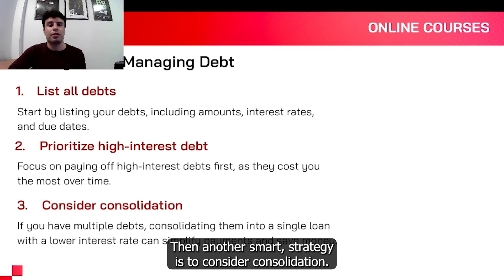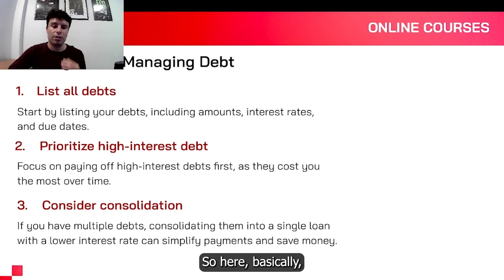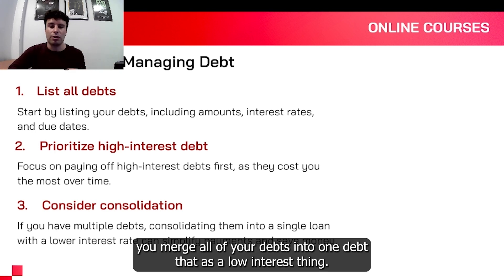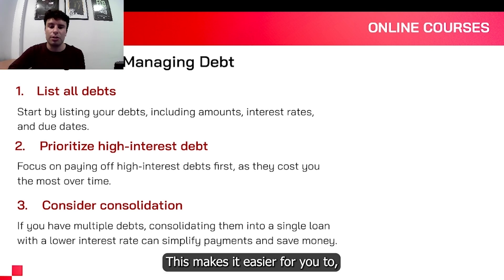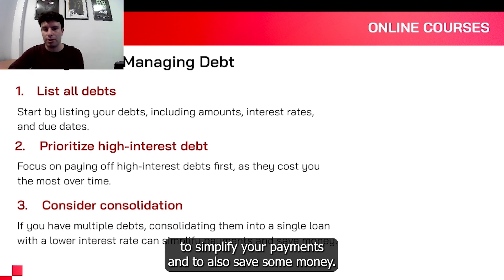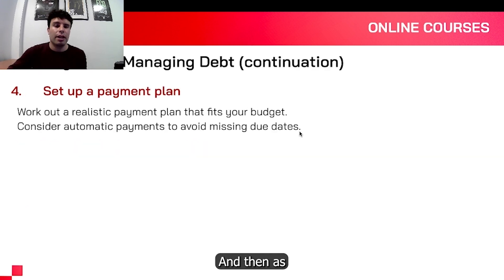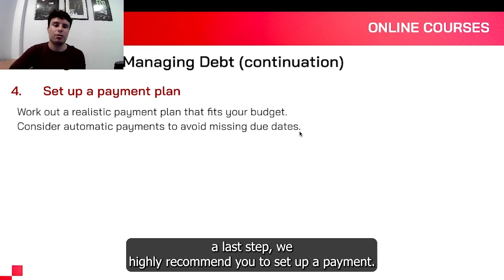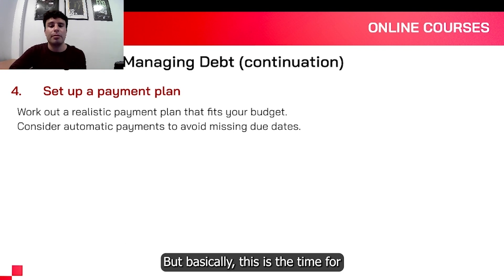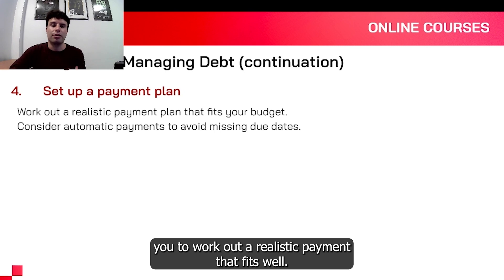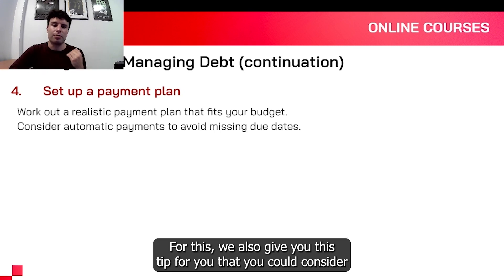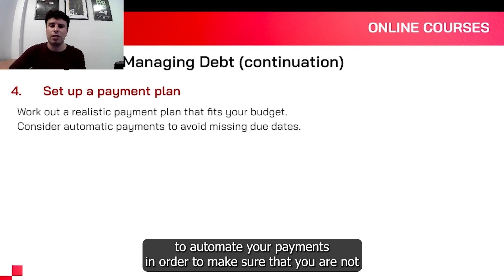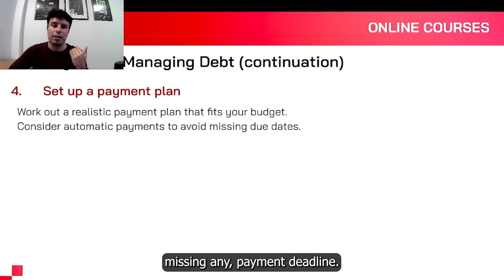Another smart strategy is to consider consolidation. Basically, you merge all of your debts into one debt that has a low interest rate. This makes it easier to simplify your payments and also save some money. And then as a last step, we highly recommend you to set up a payment plan — a realistic payment plan that fits well within your budget. We also suggest that you consider automating your payments in order to make sure that you are not missing any payment deadline.